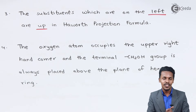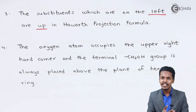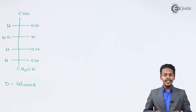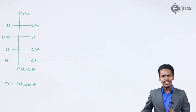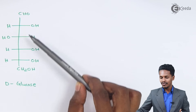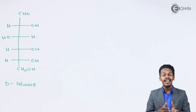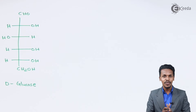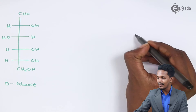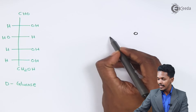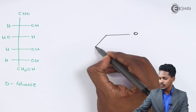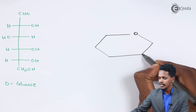Now let me give an example showing how to write the Haworth projection formula from the Fischer projection formula. We will also understand the enantiomers — the D form and the L form. Let's take D-glucose as an example. The cyclic structure has oxygen at the upper right position, and it consists of six carbon atoms.